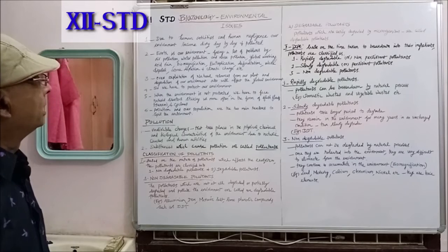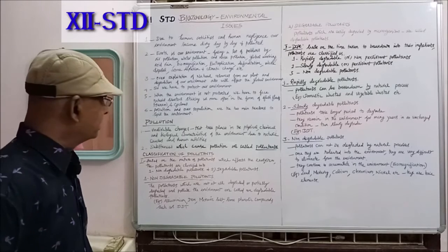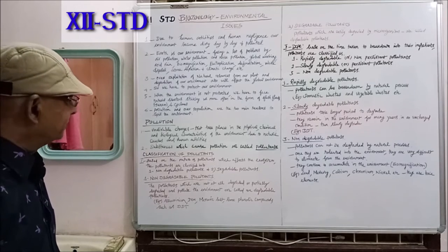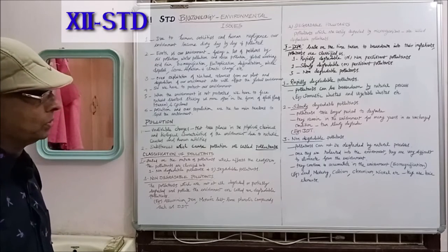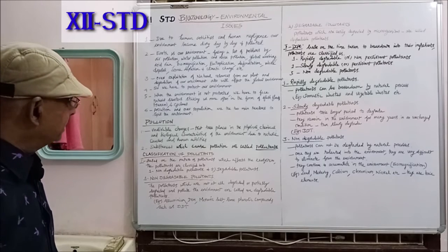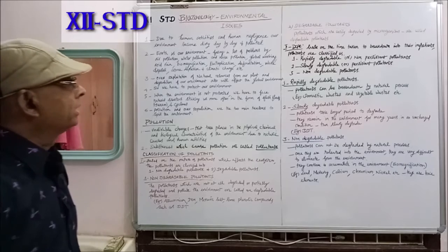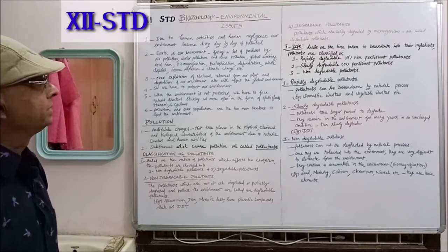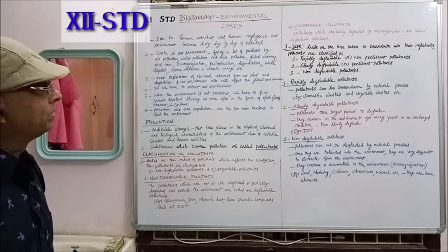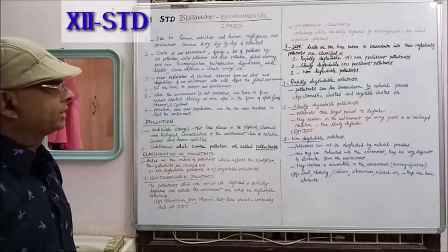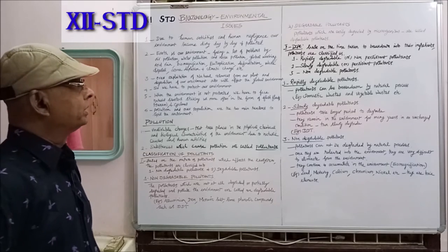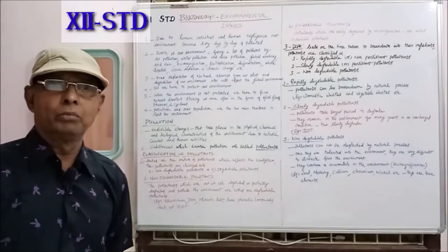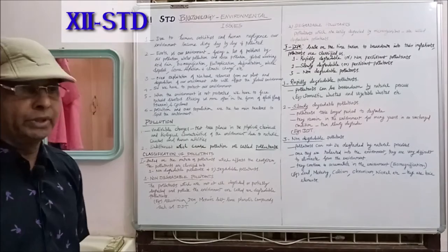Today we have seen about environmental issues in general. We covered pollution — what is pollution and what are the different types of pollutants. In the first type of classification: non-degradable and degradable pollutants. In the second type of classification, there are three types: rapidly degradable pollutants, slowly degradable pollutants, and non-degradable pollutants. That's all about today's topic. Thank you.